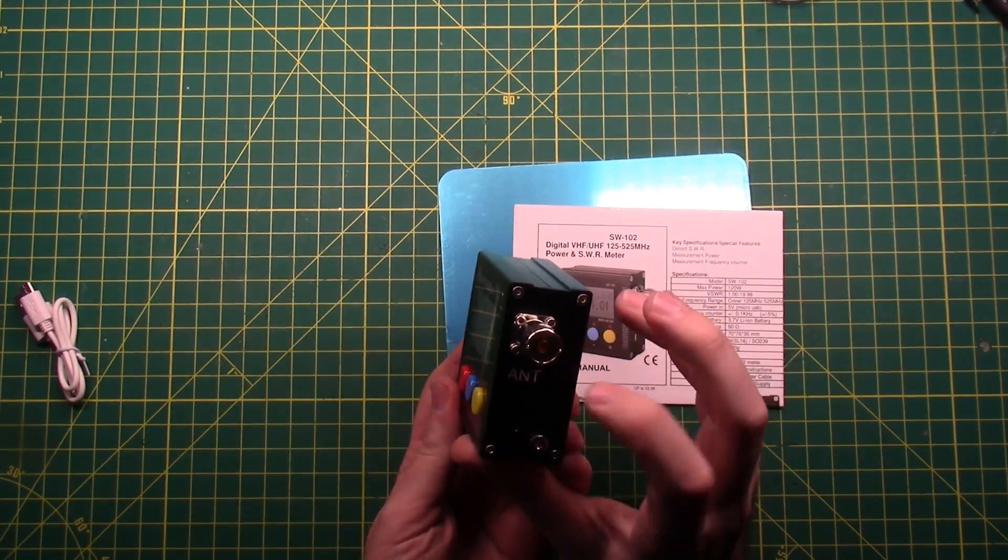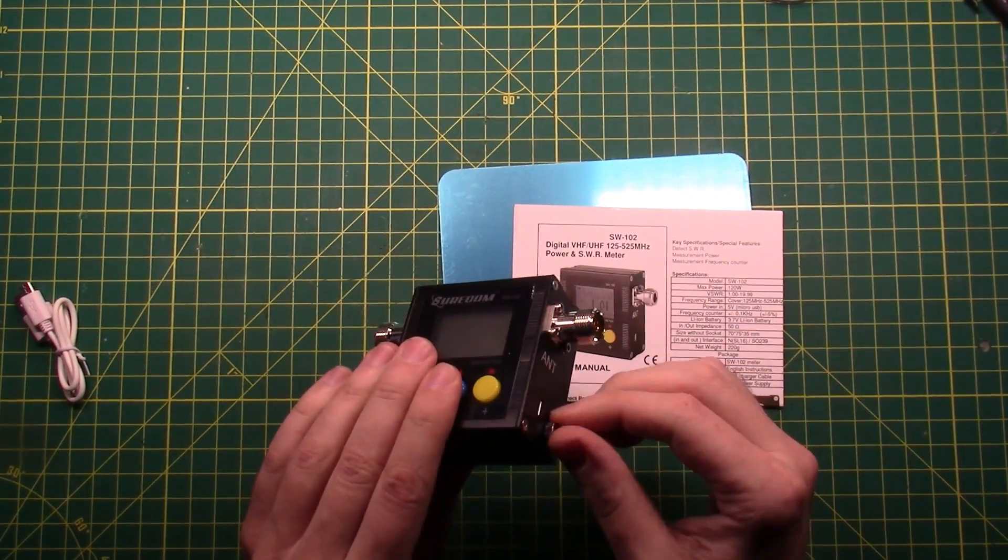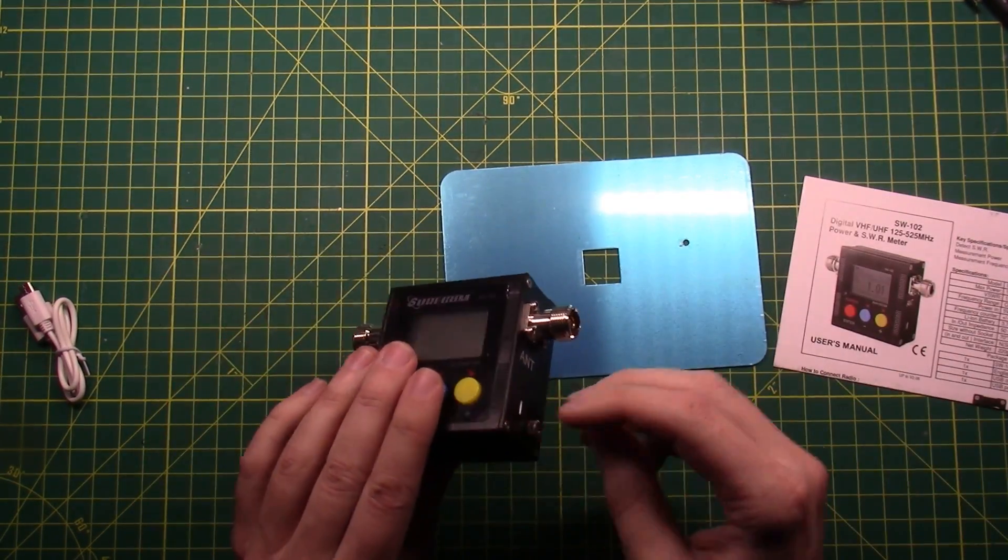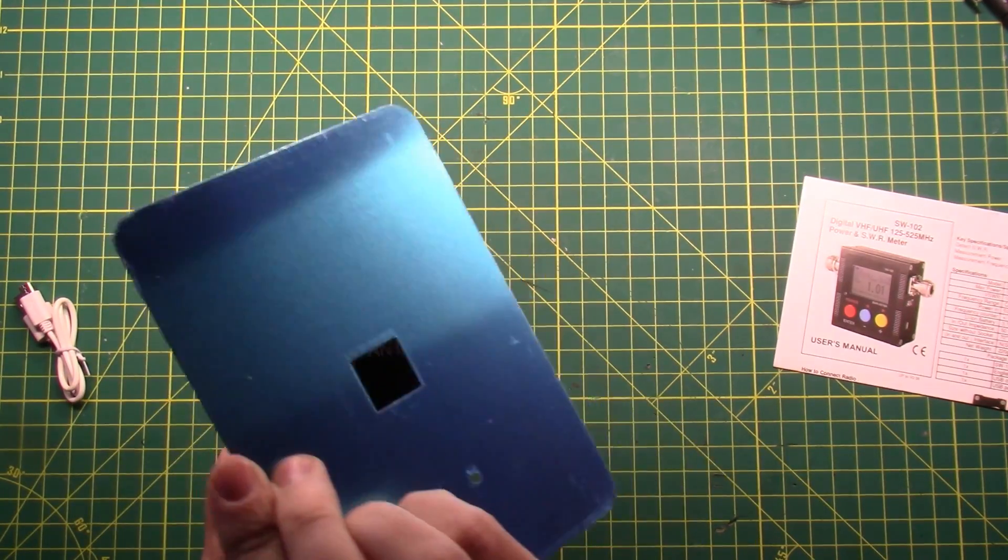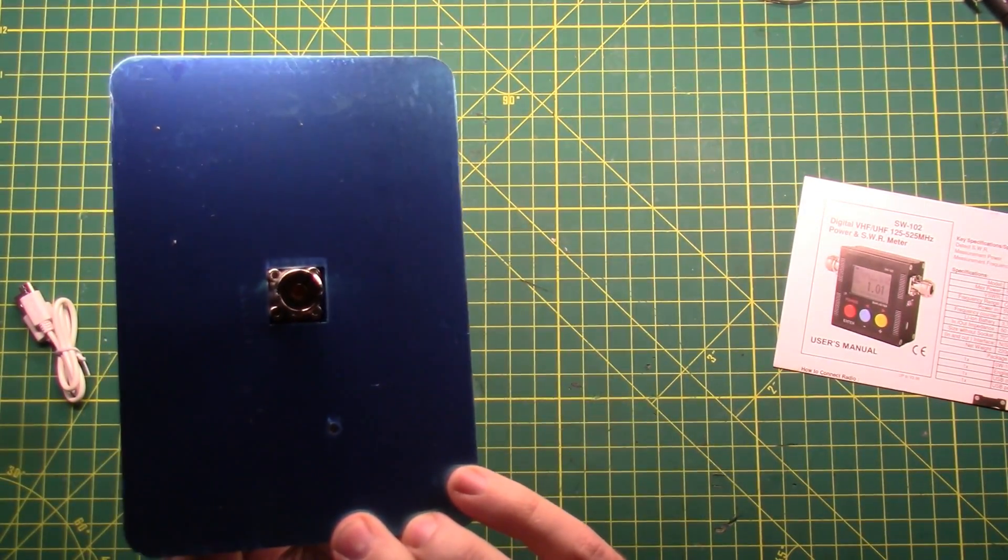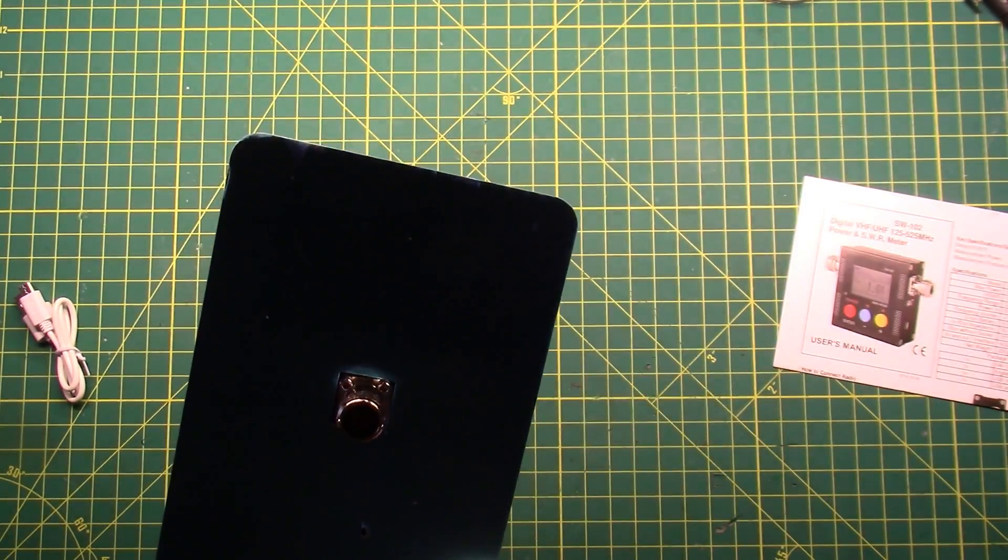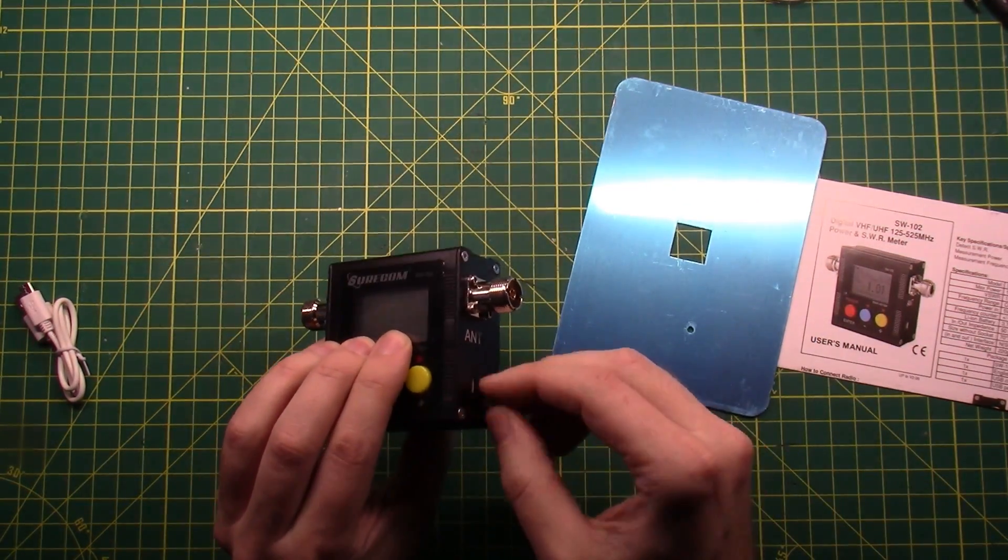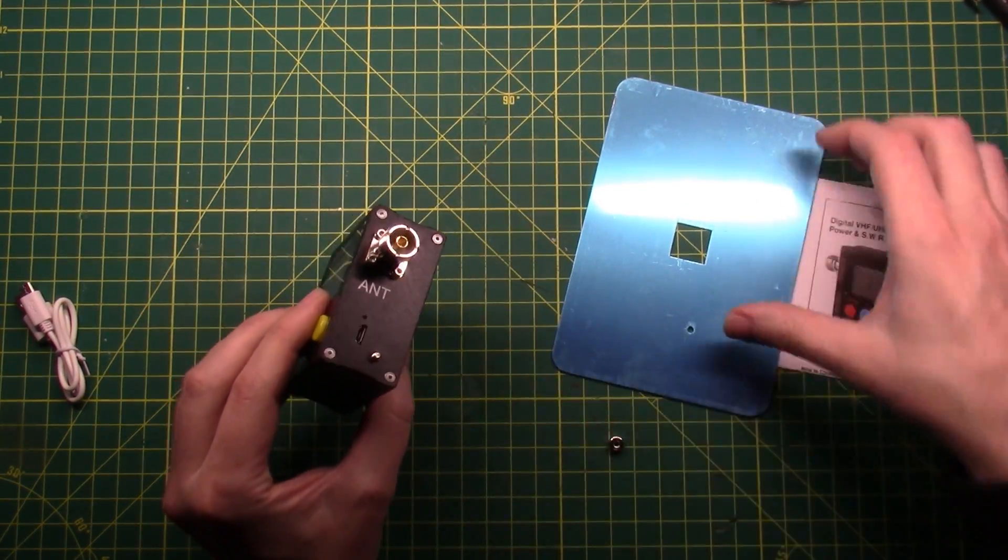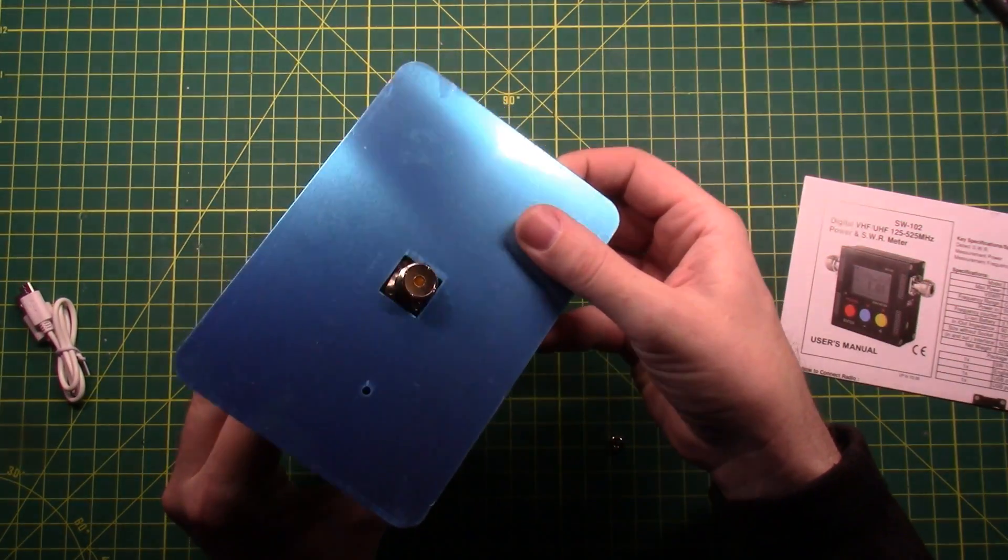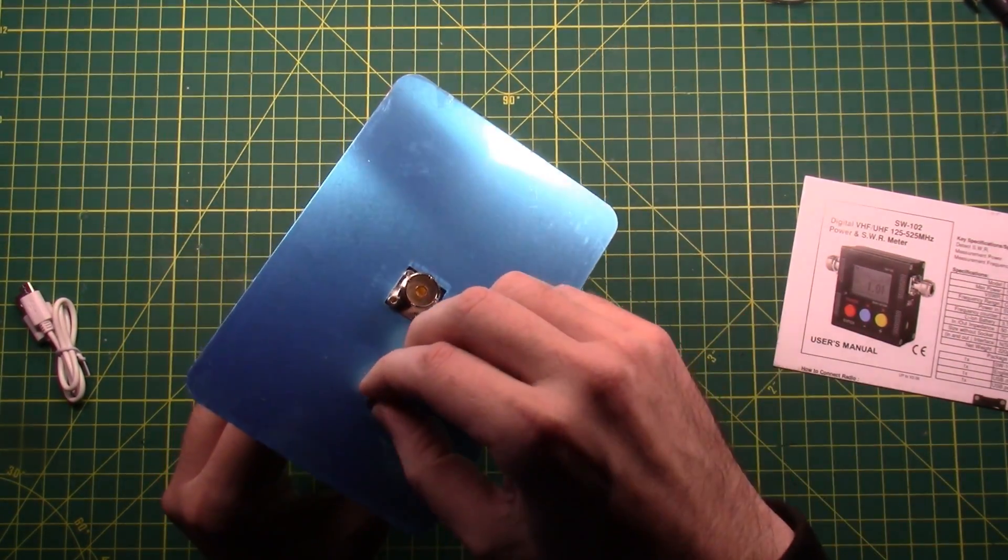Alright, so this goes to the transmitter, this goes to the antenna, that goes to the power port. That is a grounding lug, I guess they want you to put the... Is that what they want you to do? Oh, wow. It does fit. That's interesting. I mean, I know what they're trying to do, but that's interesting. That's what that's for.